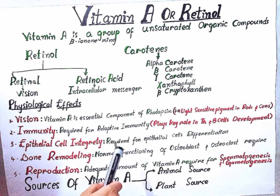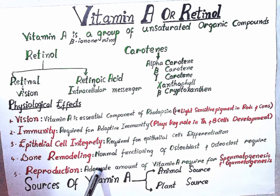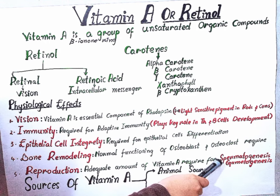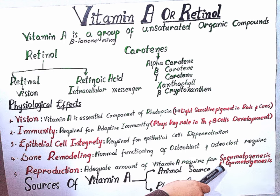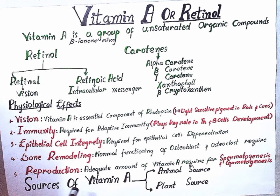For reproduction, an adequate amount of Vitamin A is required for spermatogenesis — sperm production in males — and for gametogenesis — the normal female reproductive cycle. Without adequate Vitamin A, normal spermatogenesis and gametogenesis will not occur.